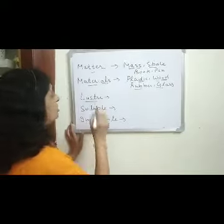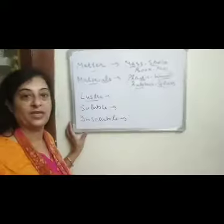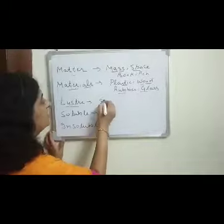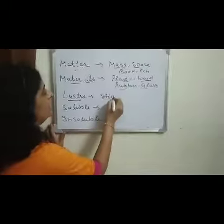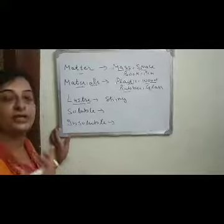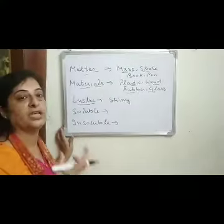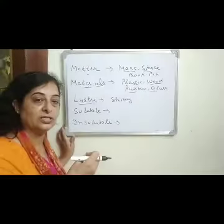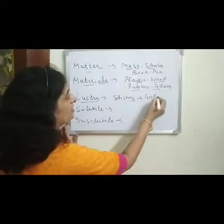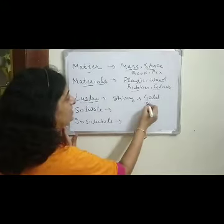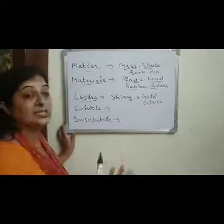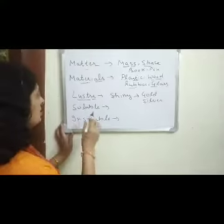Lustre means shiny appearance. If any object has a shiny appearance, then this object is known as a lustrous material. For example, gold, silver, and steel have lustre.